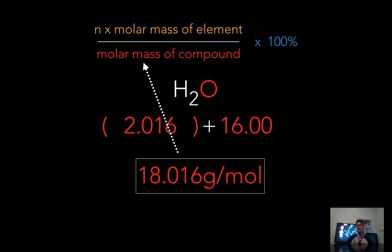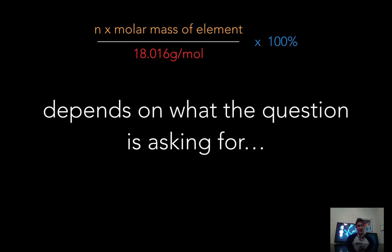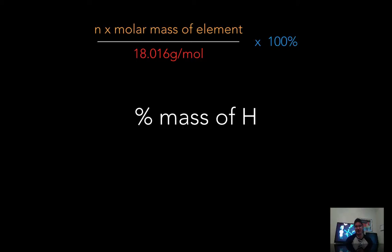So one mole of water molecules has a mass of 18.016 grams per mole. That is the molar mass of the compound. That is the whole. Now it depends on what the question is asking for. Let's say I'm asking percent mass of hydrogen or percent mass of oxygen. The question can ask for either one. Some compounds like glucose have three elements. You'll get a question that might ask for the percent mass of carbon, hydrogen, or oxygen. In this case it could be either hydrogen or oxygen.